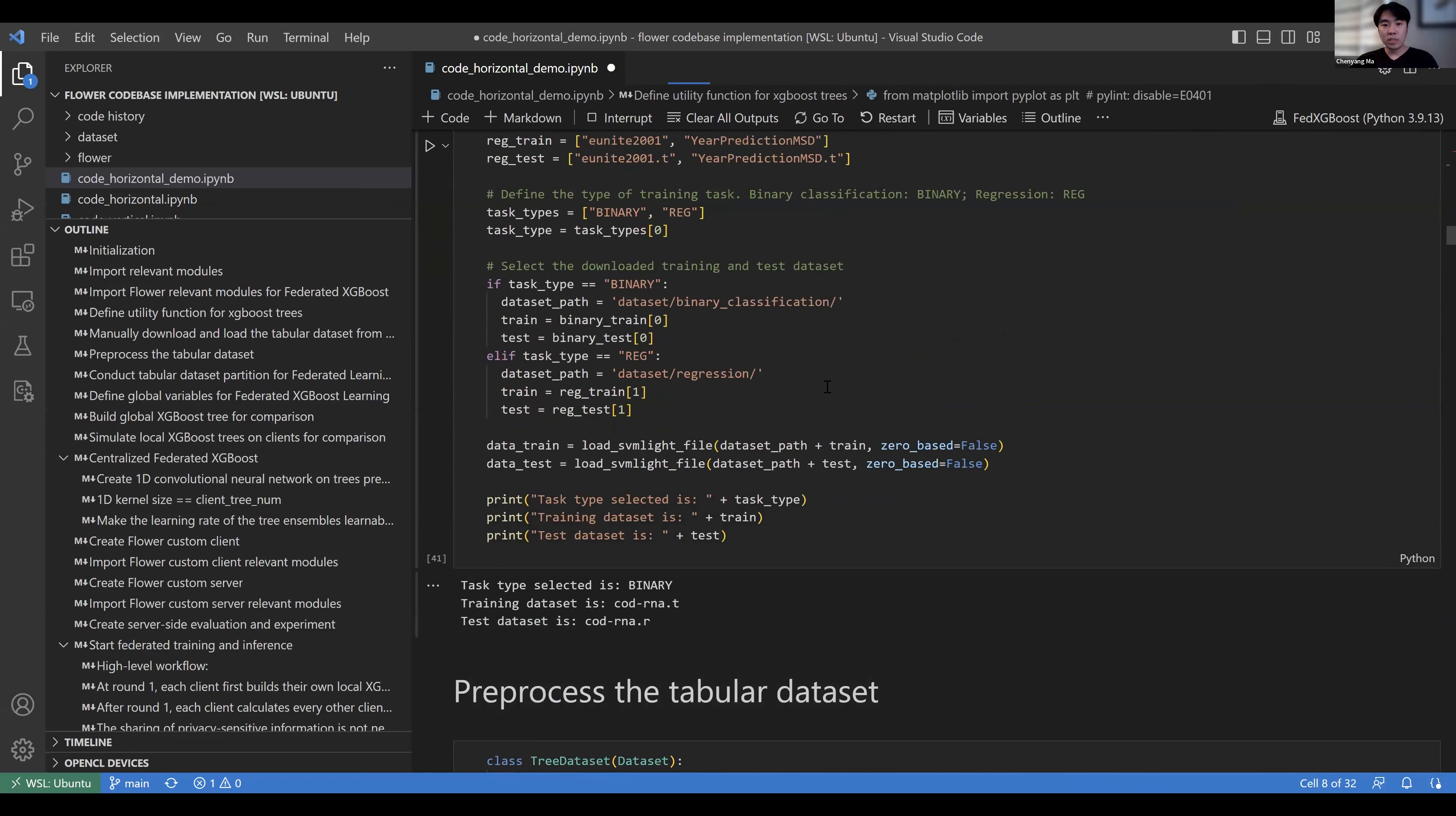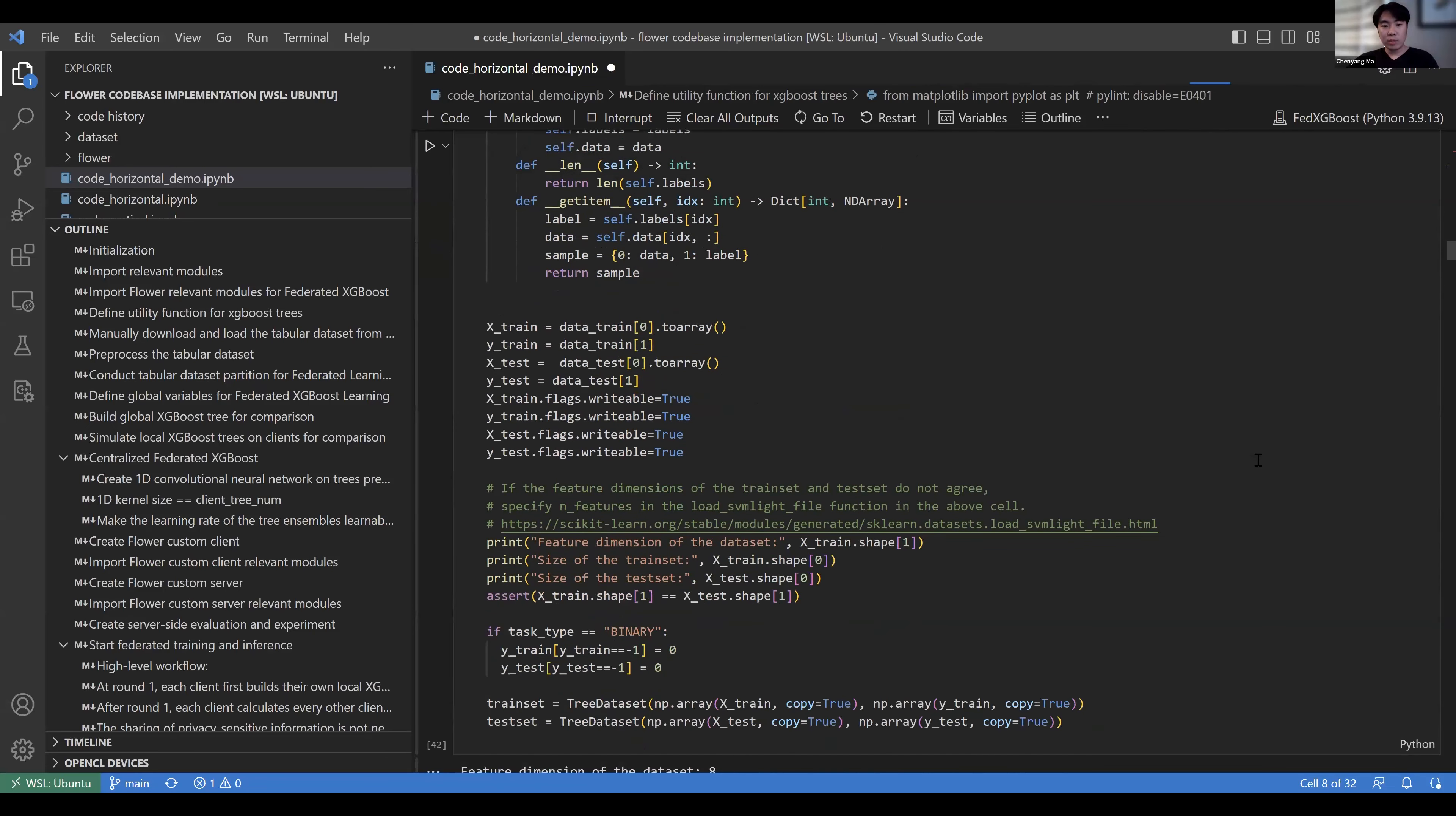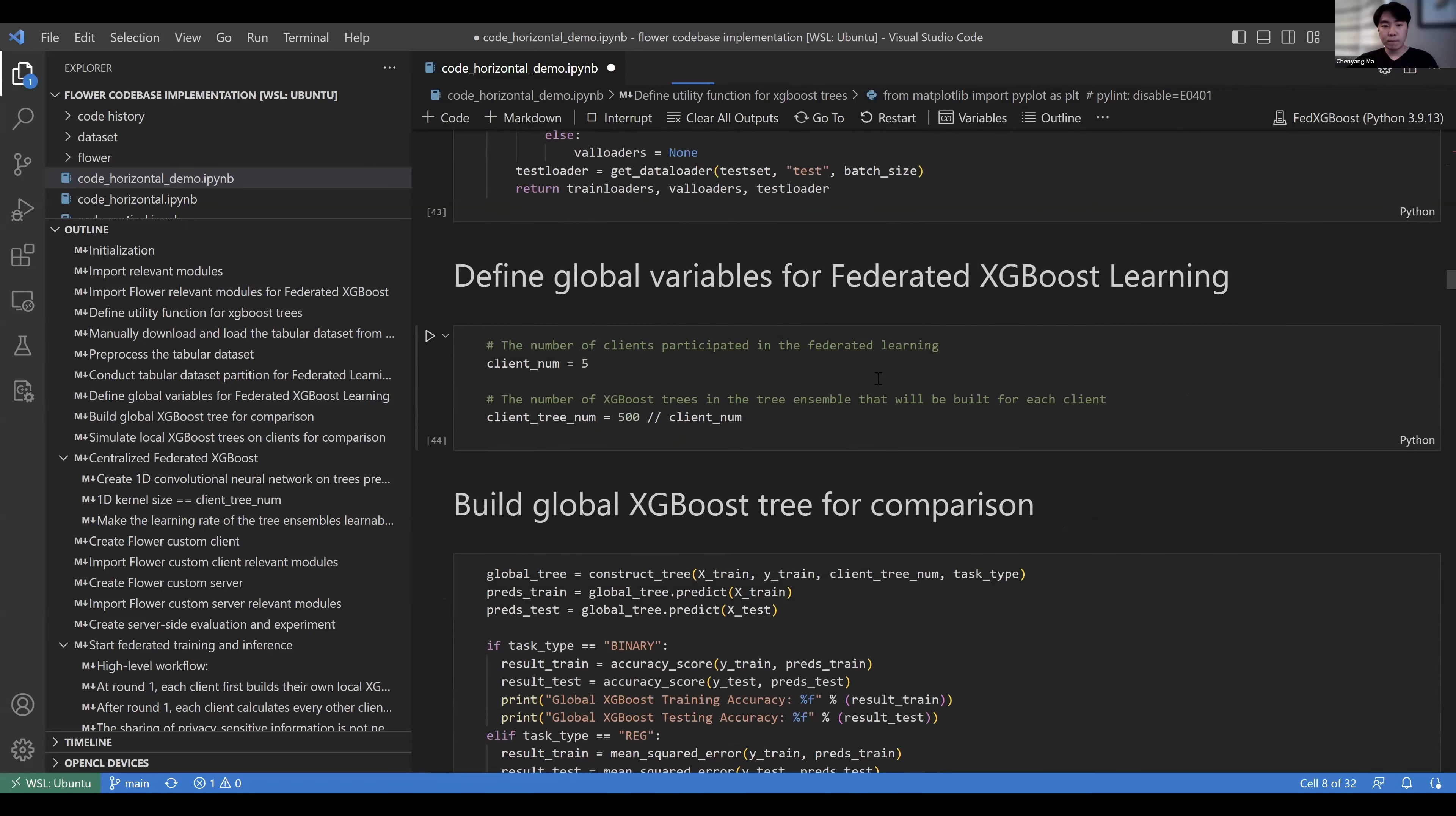Here we select the data sets we want to use. I select the task type to be binary classification and the data set to be CODRNA. Then we preprocess the data sets. In this block we do the federated learning partitioning for all clients. Then we define the hyperparameters for federated learning. Here I define the number of clients to be 5 and the number of tree ensembles in each client to be 100.